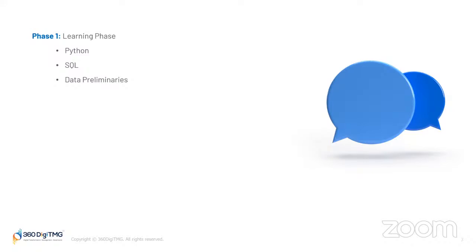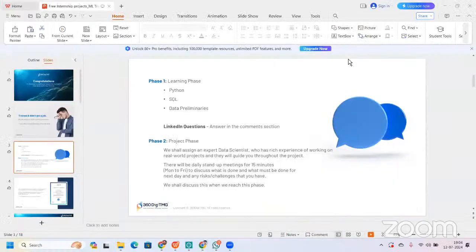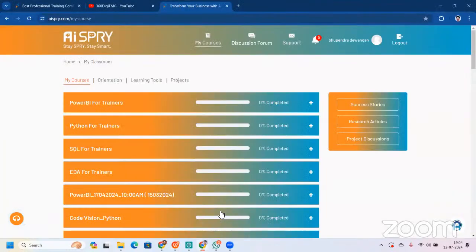Once you are through with the videos, you will opt for the assessment. How do you get access to the LMS? You already have a community. We will post a Google form there, and you have to fill it. Once you fill that Google form, a team in the backend will give you access to the Learning Management System — the LMS. Let me take you to our LMS. This is how it looks — you will get your videos here and opt for assessment.